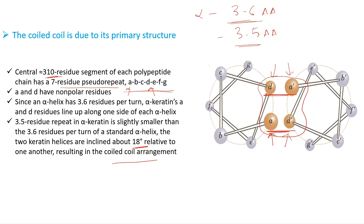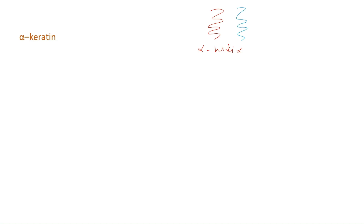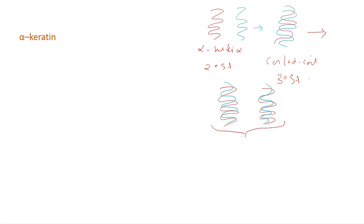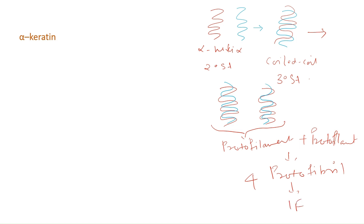Summarizing the structural hierarchy of alpha keratin: the primary structure is the amino acid sequence and composition; the secondary structure is the alpha helix; two such alpha helices arrange in a coiled-coil manner to form the tertiary structure; two such coiled-coil structures interact to form the quaternary structure, known as a protofilament.